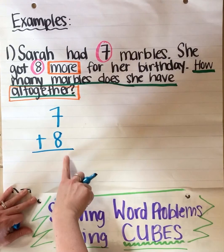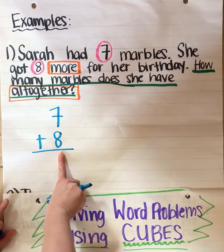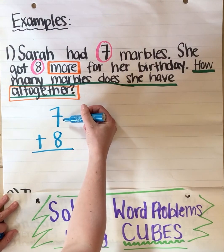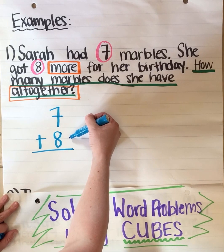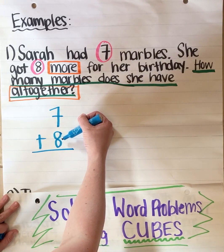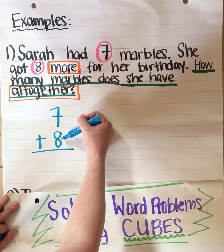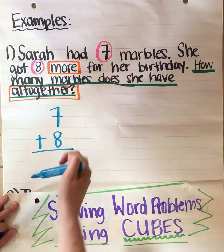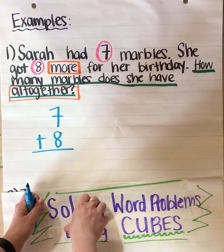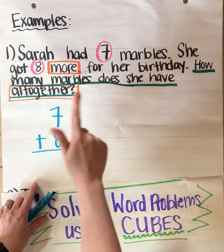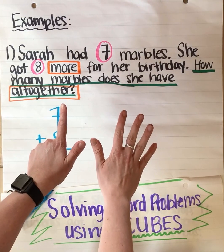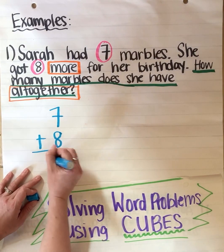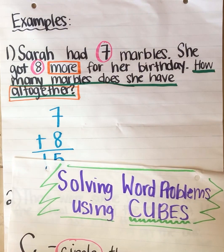Okay now you can use any strategy that you know to solve this question. You could use counting up. Maybe you can use doubles — I know that seven plus seven is 14, and that's one more than seven plus seven so it must be 15. Or maybe you know that eight plus eight is 16, and that's one less so that's 15 as well. Or maybe you're going to start at eight and count up by seven: eight, nine, 10, 11, 12, 13, 14, 15. Or maybe you use a number line. Any strategy that you need to solve the problem.